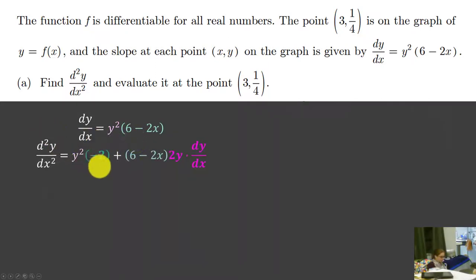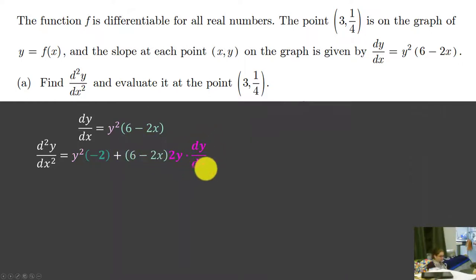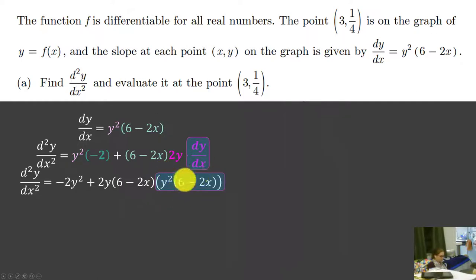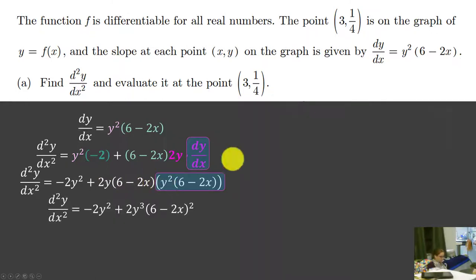Here is our function — it's a product of two functions, so we'll use product rule. The first times derivative of the second, and the derivative of 6 minus 2x is negative 2, plus the second function times derivative of the first, and we remember chain rule. We can't leave it like this because we have a formula for dy/dx. dy/dx equals y squared times (6 minus 2x), so we substitute that in. Then we combine: y times y squared is y cubed, and (6 minus 2x) times (6 minus 2x) we write as (6 minus 2x) squared.